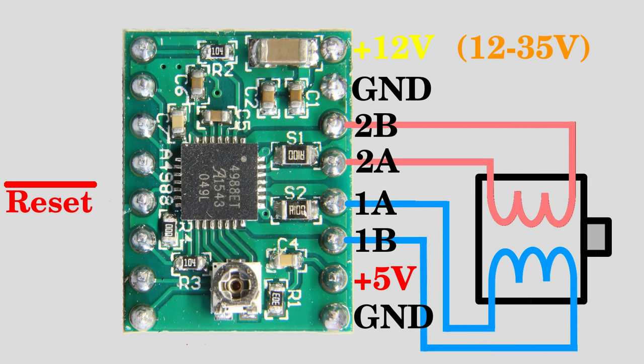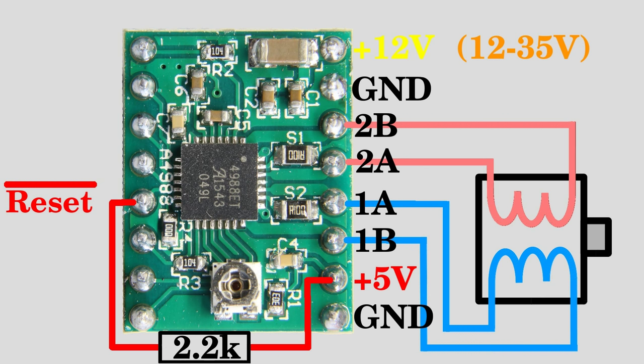Not reset must be on high level to activate the chip, which is done by an external 2.2kΩ pull up resistor. Furthermore, not enable must be on low level. The board has an internal pull down resistor, thus that pin is on low level by default.